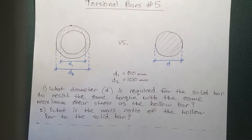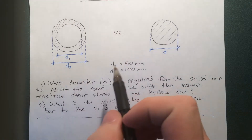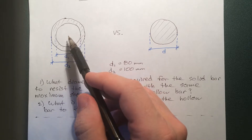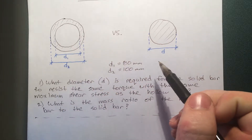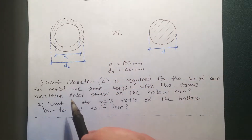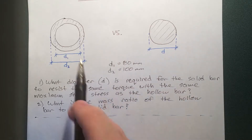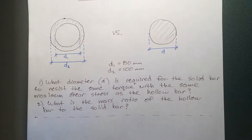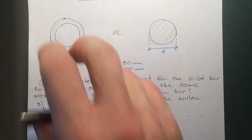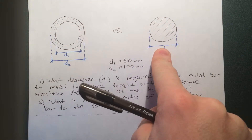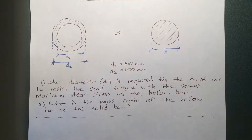So let's go ahead and solve this. This bar here is the one we have, and we want to find the equivalent diameter D so it can resist the same torque and not exceed the same maximum shear stress, because we're going to assume we're making it out of the same material. So you're twisting this bar — what does this diameter have to be to make this one do the same?